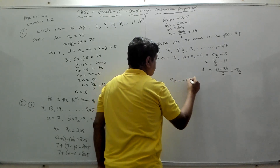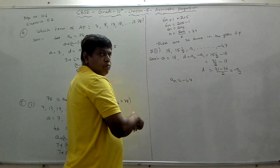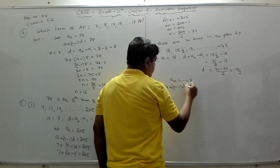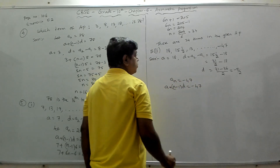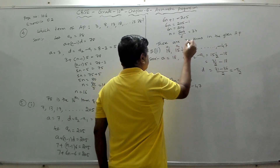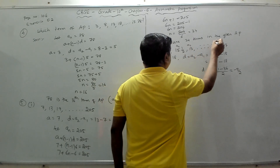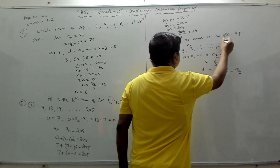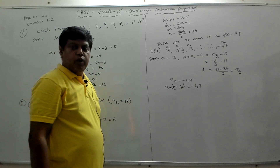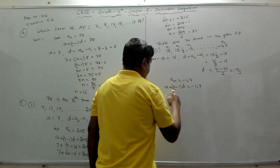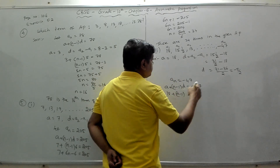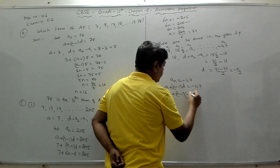Now assume −47 as the nth term: let an = −47. We have to find n. Using the formula: a + (n−1) × d = −47, substituting a = 18 and d = −5/2: 18 + (n−1) × (−5/2) = −47.